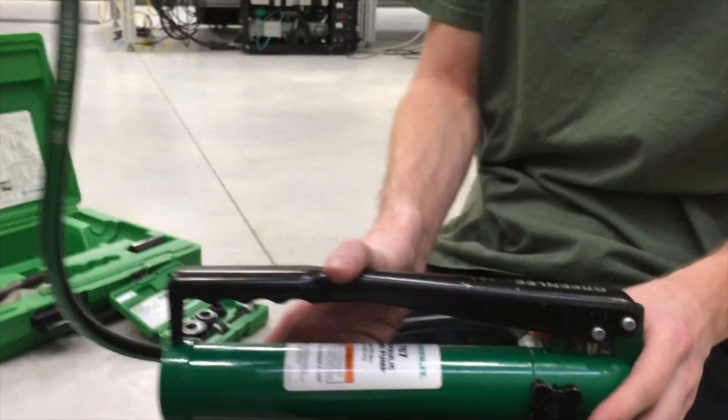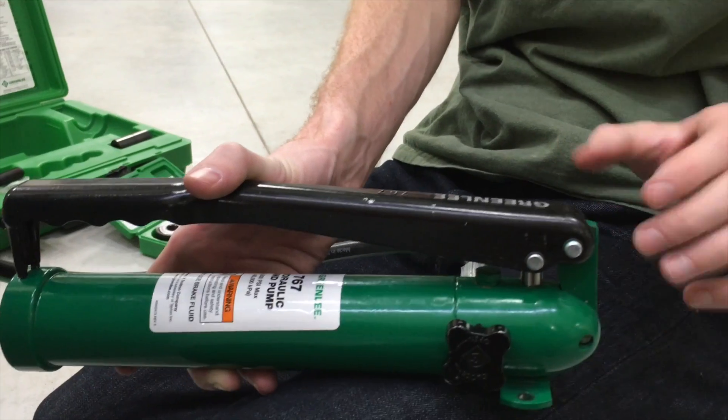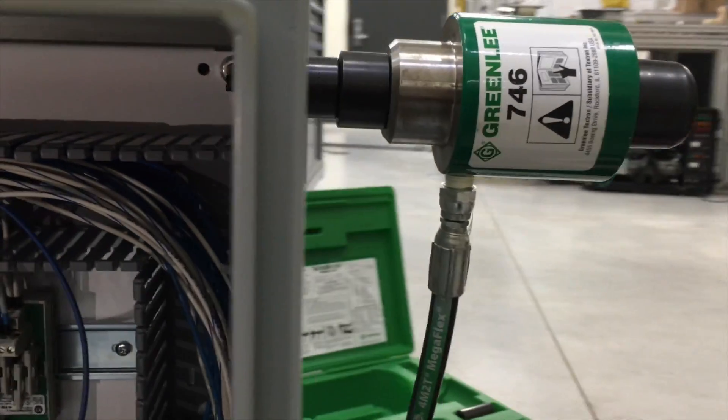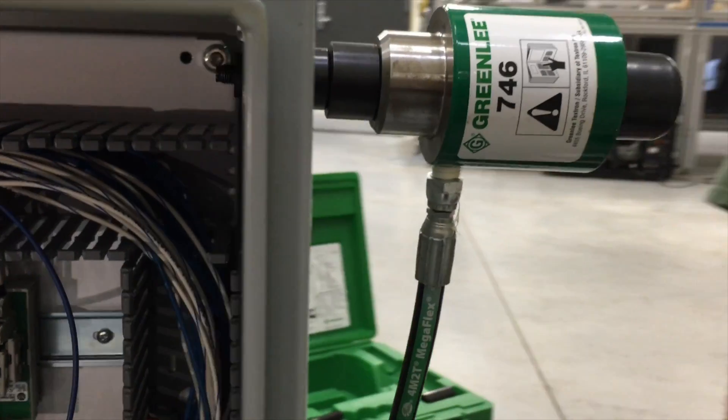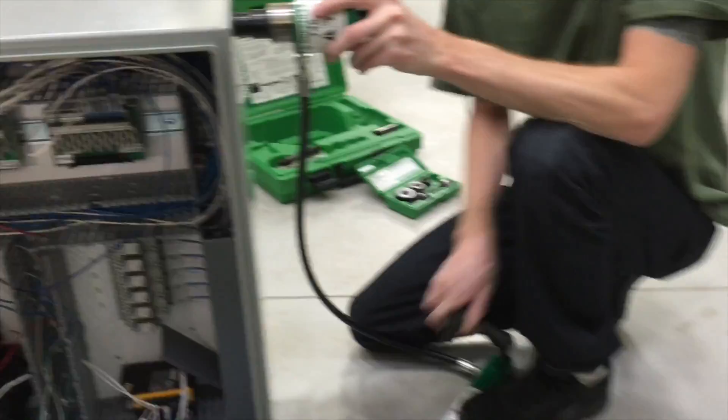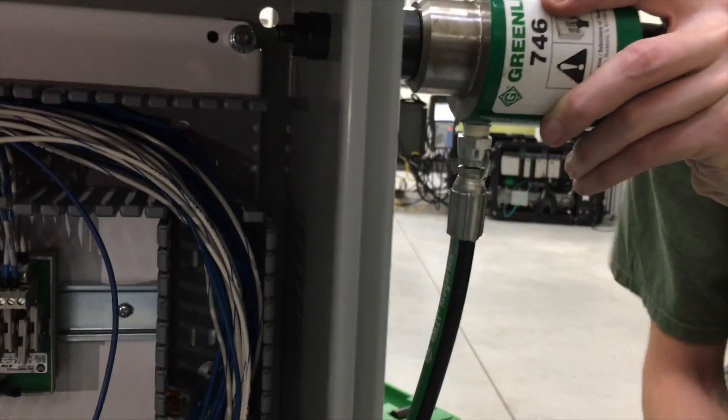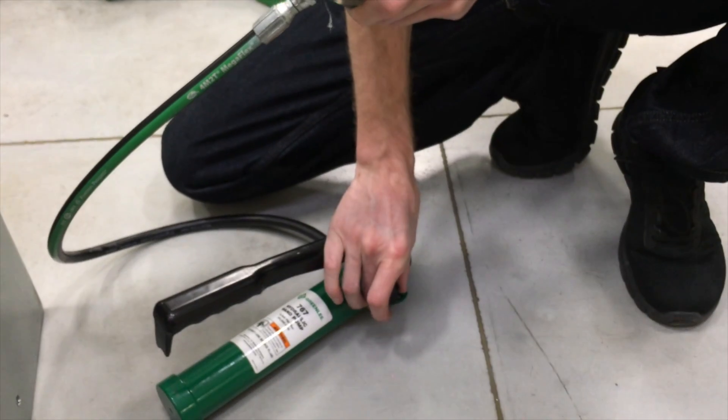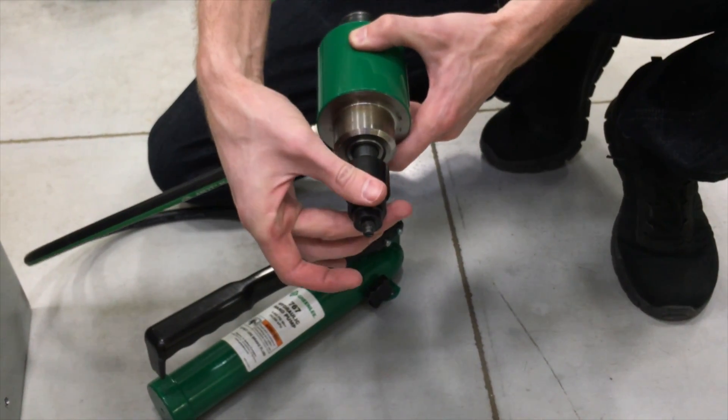So we'll close the valve here, just like on a car jack, tighten her down. And now as I pump this, it's going to draw that die through to create our knockout. It's a few pumps, but it's very easy to do. There's no pressure or force I'm having to use. It's creating all the pressure. Once you hear that, it's two pops. And we can release the pressure here so you'll see our cylinder come back out.